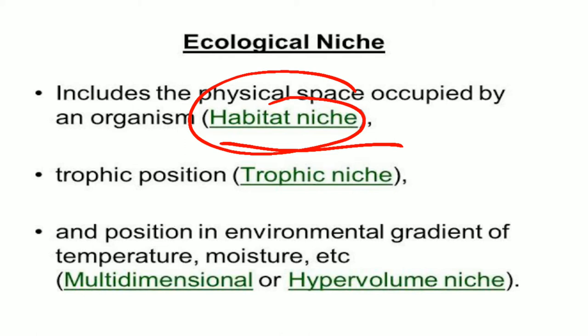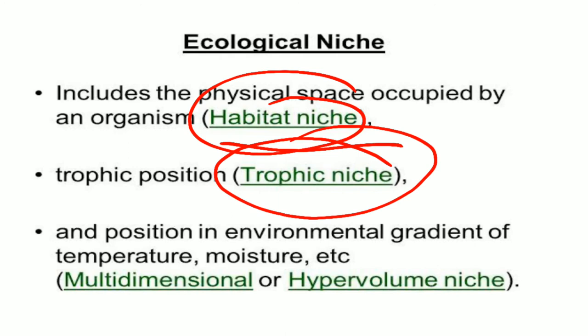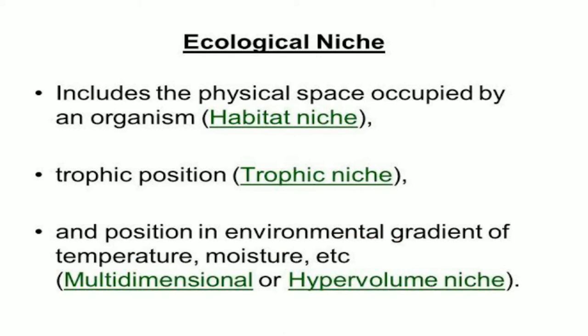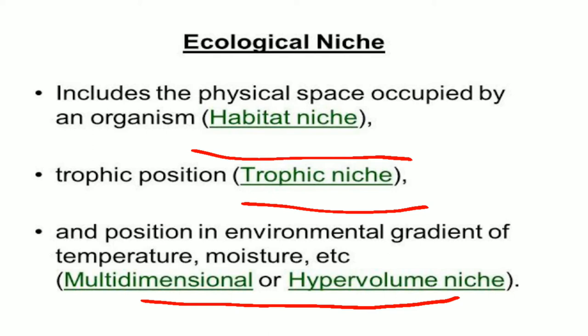The trophic niche denotes the functional position of an organism in the ecosystem — that is, whether an organism is a producer, a consumer, or a decomposer. The third aspect is the hyper-volume or multi-dimensional niche, which refers to the position of the organism in the environmental gradient — for example, up to what temperature and degree of moisture it can tolerate. When all three — habitat niche, trophic niche, and hyper-volume niche — are understood, this completes the ecological niche.